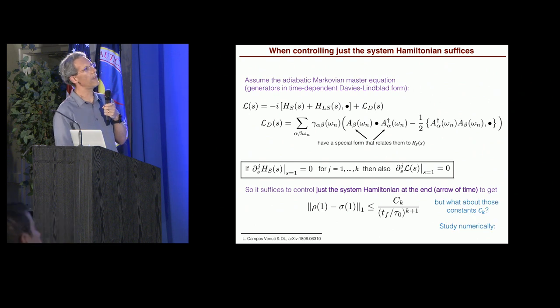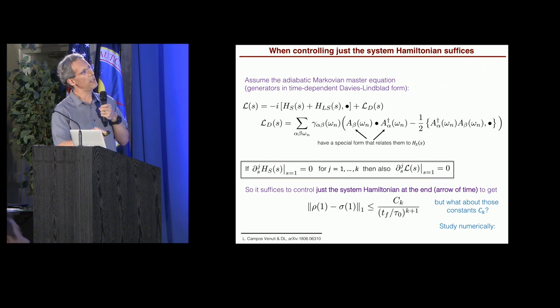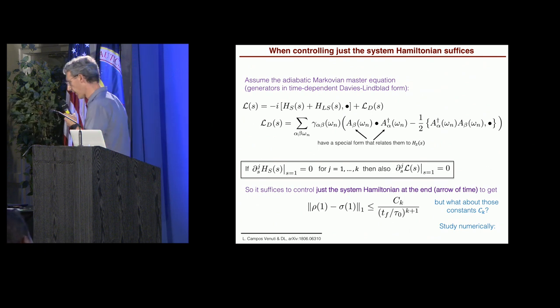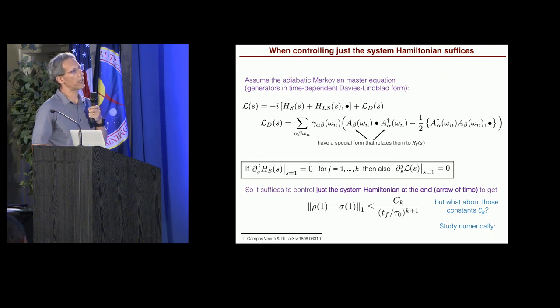All right? So only Hamiltonian derivatives suffices, even in the open system case, and only at the end. So the second thing I still have to tell you about is what about those constants, CK? Because this right-hand side here could still grow arbitrarily with K. So to address that, we have to do that numerically.